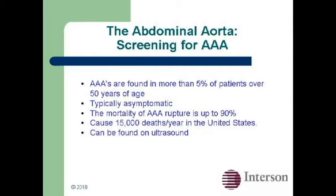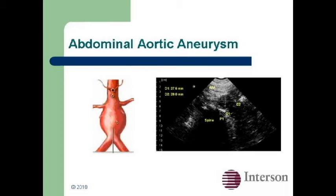Abdominal aortic aneurysms, or AAAs, are found in more than 5% of patients over 50 years of age and cause 15,000 deaths per year in the United States. The mortality of AAA rupture is up to 90%. Though most intact aortic aneurysms do not produce symptoms, the diagnosis of an abdominal aortic aneurysm can be confirmed by the use of ultrasound.